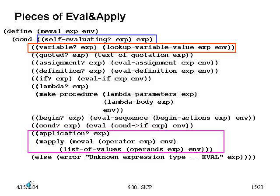Let's skip down to procedure application. The evaluator gets the value of the operator by recursively evaluating the sub-expression, then gets a list of values of the other expressions — we explicitly require a list here, evaluating each in turn and constructing a list of values. Note that our data abstraction isolates the issues of the order of arguments from our evaluator — operator simply selects out whatever we decide in terms of our semantics and syntax. And as we saw, apply will now evaluate the sequence of expressions that it assumes the body contains.